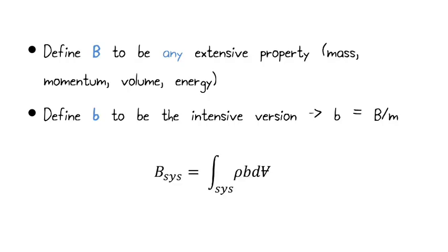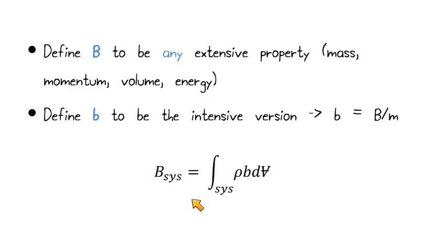One other thing we can look at — and it gives the Reynolds Transport Theorem the name integral control volume analysis — is that we're looking at a certain volume, and we can talk about integrating over that volume to get the B for the whole system. We look at our little b, multiply that by the density, which is kind of like the mass, and then integrate that over the entire volume. That gives us the total amount of B in that system, or we could do something similar for a control volume.